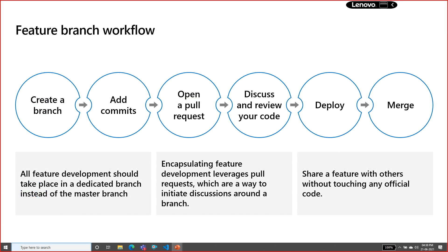For the feature branch workflow: you create a new branch from the master branch, do the commit operation, create a pull request, discuss and review the changes made in the code, deploy those changes to production, and finally merge back into the master branch. That is how the feature branch works.